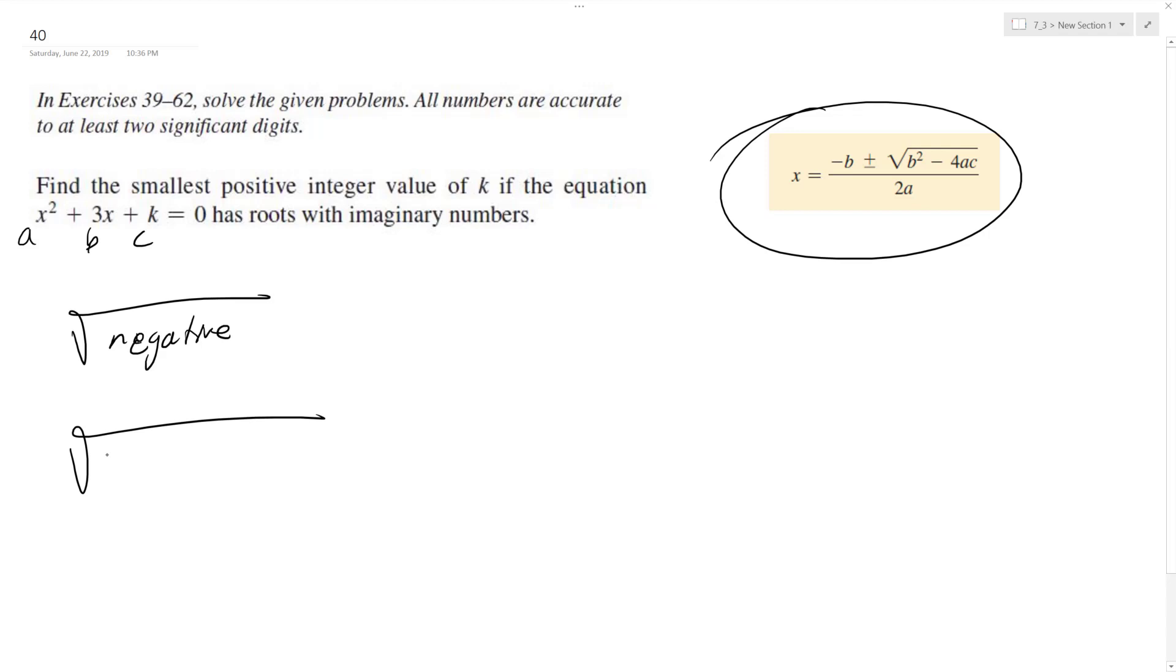Alright, so we got b squared, so that's going to be 3 squared, which is 9 minus 4 times 1, which is a, times a, which is 1, and then c, which is k.